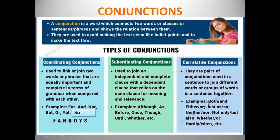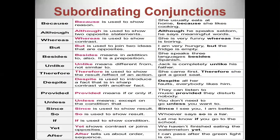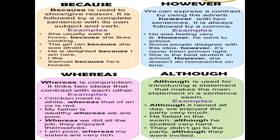Now, coming to correlative conjunctions. They are pairs of conjunctions used in a sentence to join different words or groups of words together. Whenever correlative conjunctions are used, they will be used in pairs — like 'both...and', 'either...or', 'just as...so', 'neither...nor', and so on. Before that, let's also revisit some uses: 'because' is used to show reason and is followed by a complete sentence with its own subject and verb.